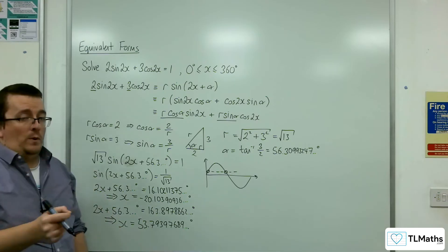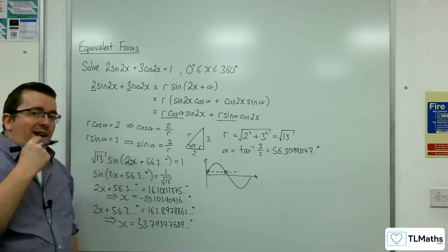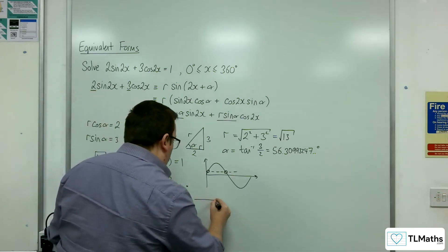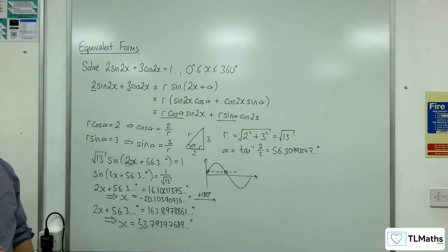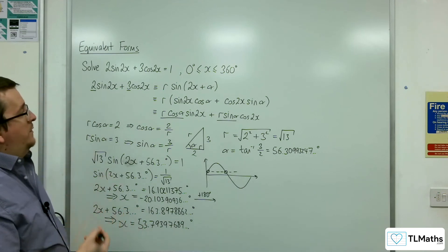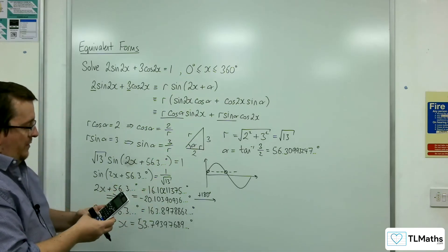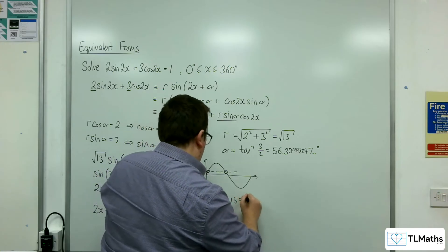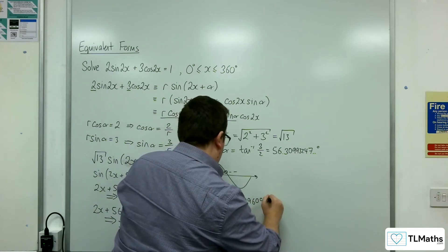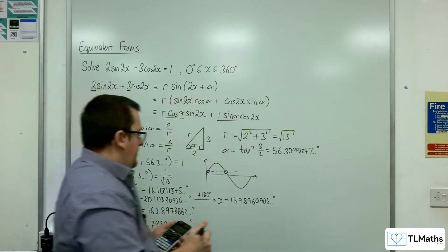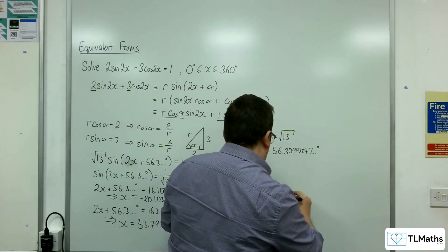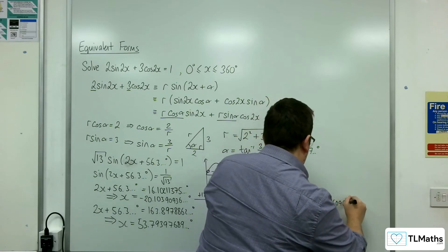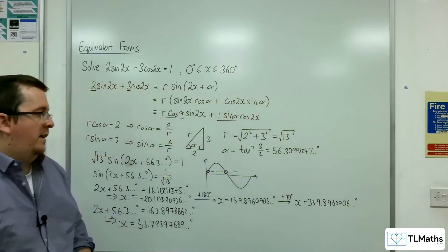Now we're dealing with sine 2x here, which has a period of 180 degrees rather than 360. So what I need to do is keep adding 180s onto my solutions to find all remaining solutions within the range of 0 to 360. Adding 180, I get x equals 159.8960906. If I add 180 to that, I get another solution, 339.8960906. If I add 180 onto that, I'm outside the range.